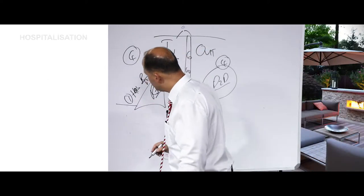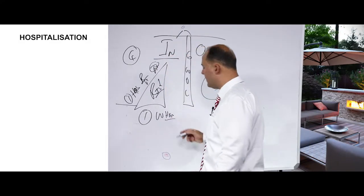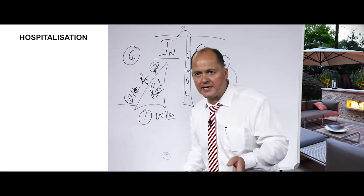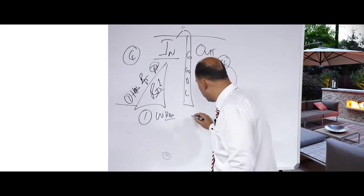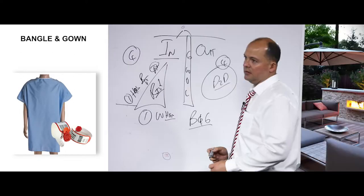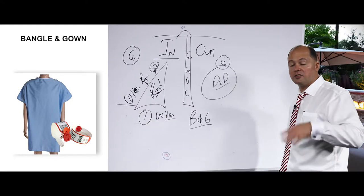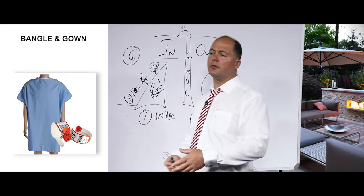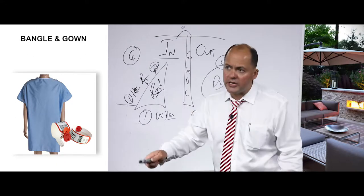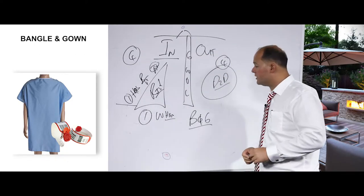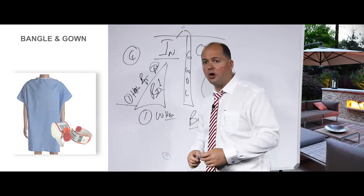In terms of hospitalization, component one — the first thing you need to know is when will the in-hospital benefit pay. It will pay for all authorized admittable procedures. To make it easier: the in-hospital benefit will pay as soon as you are wearing a bangle and a gown. Once you need to be admitted, the nurse will put a bangle on your arm, have you change into a gown, get into bed — and everything that takes place after that will be paid from the in-hospital benefit.